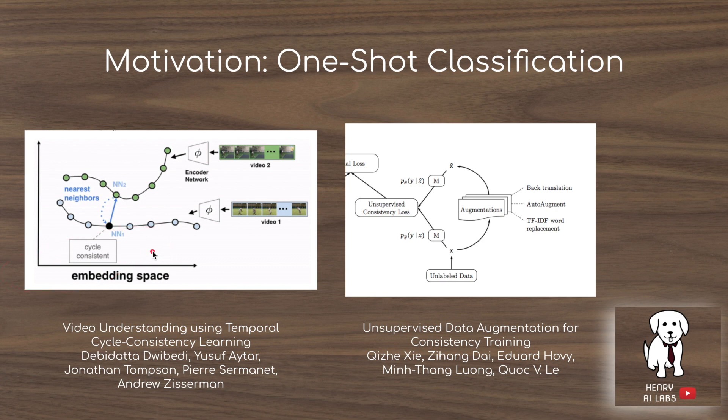These are two papers that use similar ideas to Siamese neural networks. Temporal cycle-consistency learning compares intermediate embeddings of video frames. This unsupervised data augmentation technique compares predicted labels of images after being augmented versus not augmented. You could also imagine comparing the internal feature representations of each image.